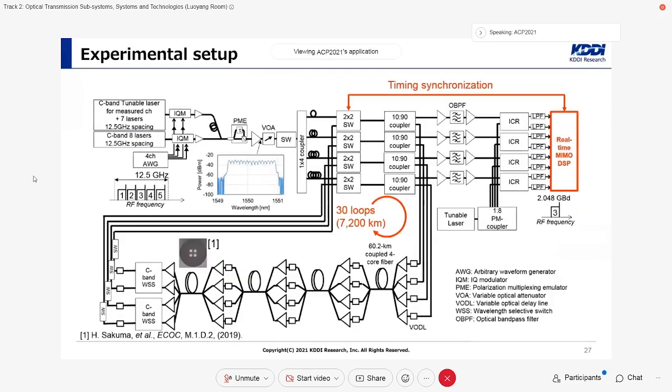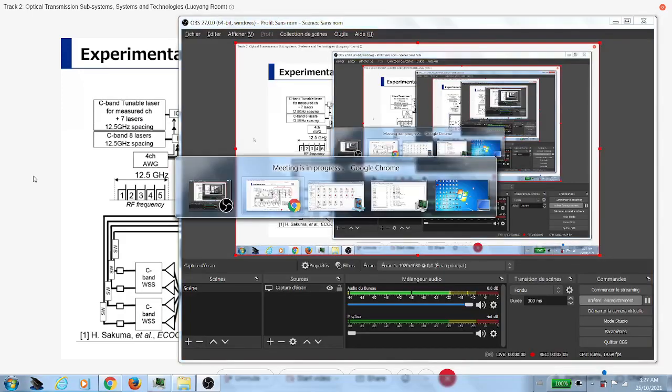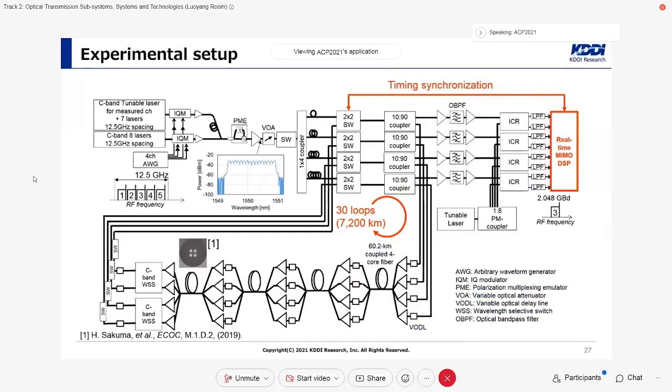With the real-time MIMO DSP, we demonstrated a real-time coupled four-core fiber transmission experiment of WDM-DP-QPSK signals over 7,200 km. This figure shows experimental setup.